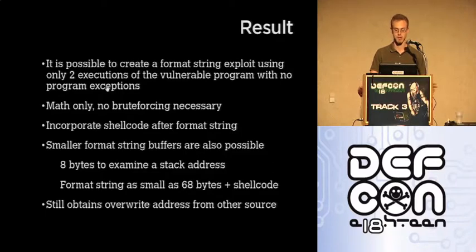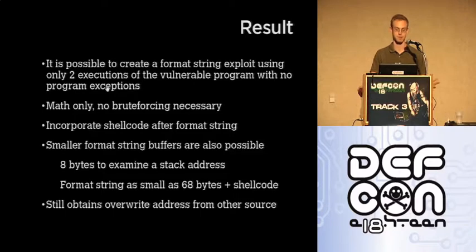However, if you don't brute force the override address or do some math, you still have to derive it from some other source such as a core dump or a known location like a program link table or the detours.